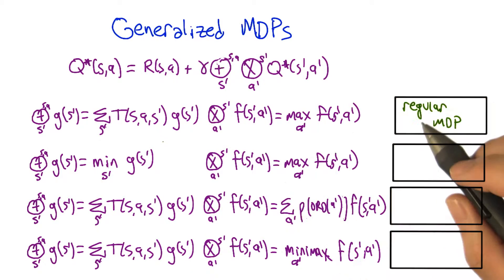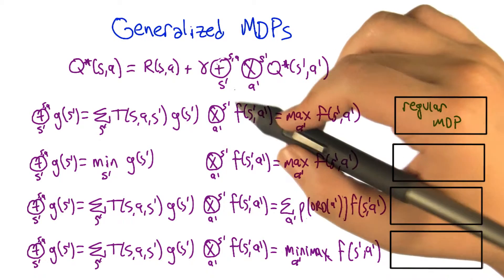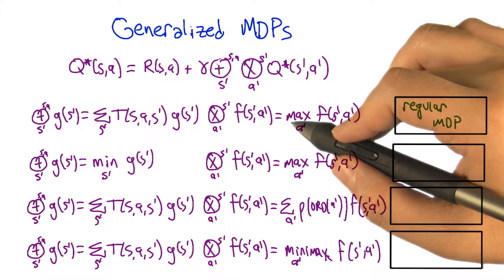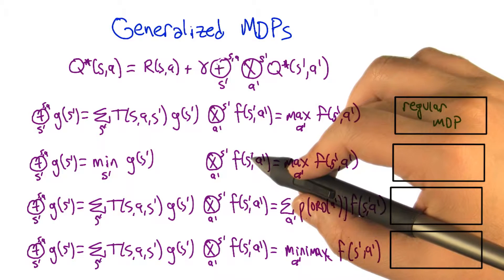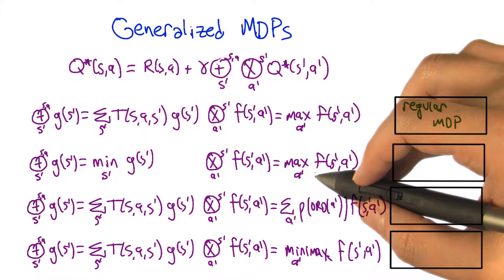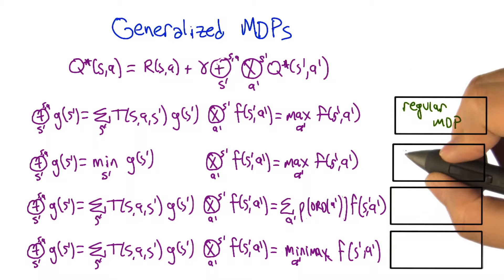Right, and so that means if we were thinking about the function at the very top, the Q star is the value of taking an action in a particular state, given that you're then going to do the best thing from that point on. But it's sort of the value you would get if you always assume the worst thing could happen. And if that were true everywhere, then you would be valuing things by the worst possible outcome. And so that would be a kind of, oh I don't know what the right word is, maybe something like a pessimistic MDP or a risk-averse MDP, something like that.